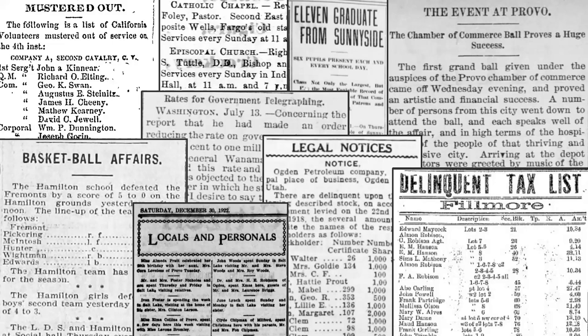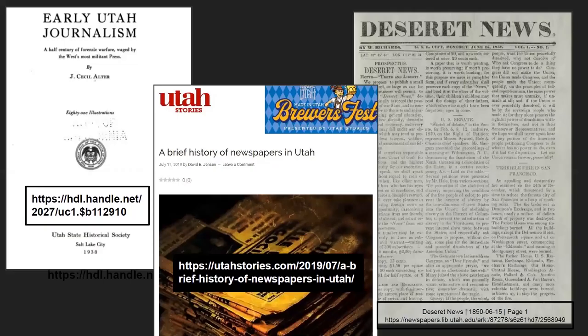One good way to find additional content is to look at other types of content often published in these newspapers. You will have your regular news articles, but you can also find interesting details about people and society such as government activities like court records, legal notices, tax lists, held mail, or military activities. You'll find community information such as church activities, community events, school events, graduation announcements, or sporting events. You'll also find advertisements that can tell a lot about what is going on in the region during a specific time period, including classifieds, personal ads, or business cards. And I like to look at letters to the editor because they can give insight into what people thought was important in that area during their lifetime.